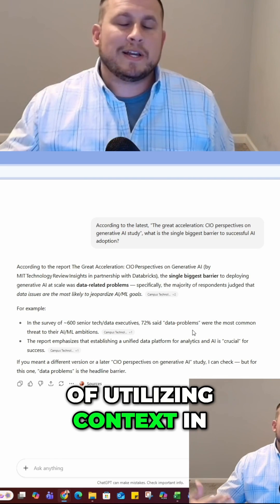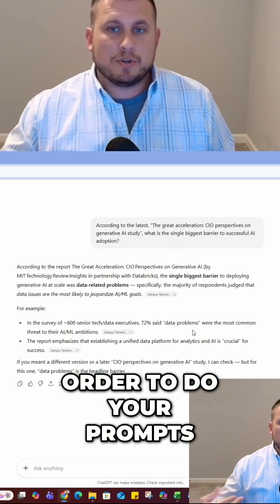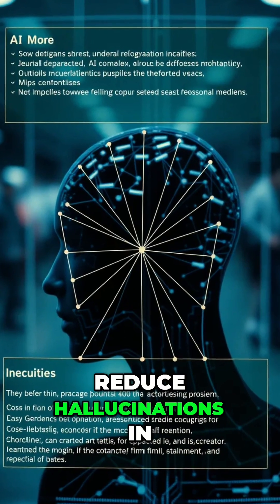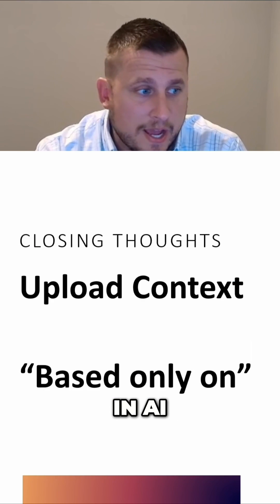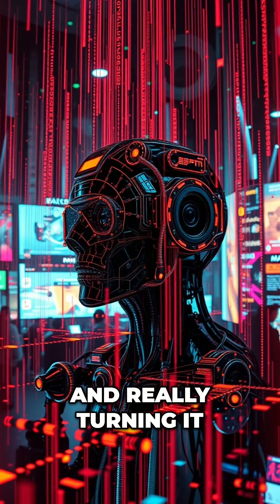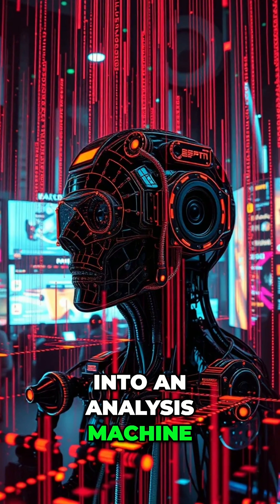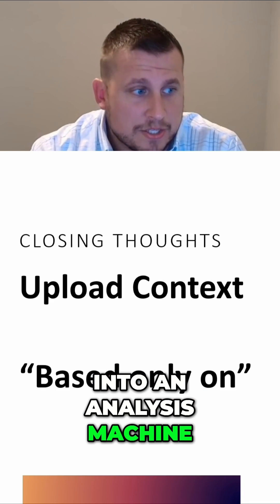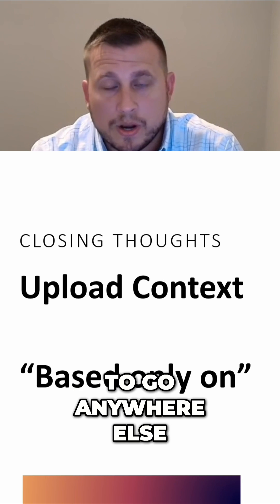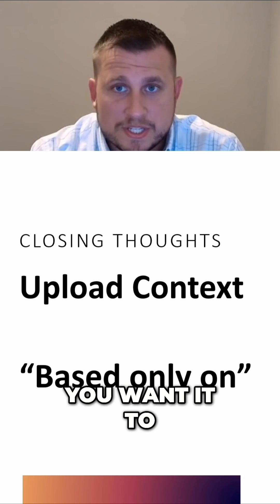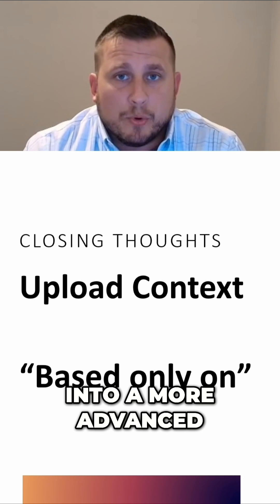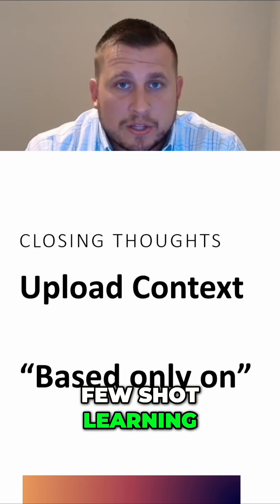So that's the importance of utilizing context in your prompts. You just learned the most powerful way to reduce hallucinations in AI. Uploading context is the secret to accuracy and really turning your AI into an analysis machine. Never forget the constraint — 'based only on this' — you don't want it to go anywhere else, you want it to stay on your file. Next time we're going to go into a more advanced series and talk about few-shot learning.